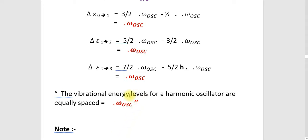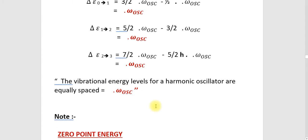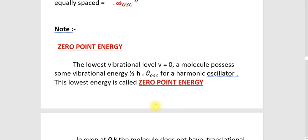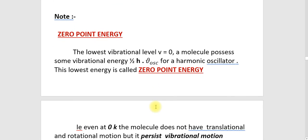In vibrational energy levels of a harmonic oscillator in joules, the spacing is h nu_oscillation, and in centimeter inverse it is also the same value, omega_oscillation. Next is an important term that you need to be thorough with: what is zero point energy?